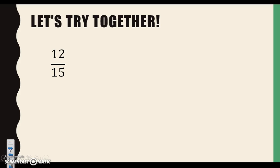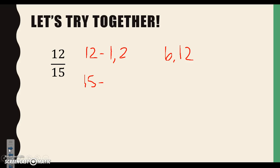Let's take a look at 12 fifteenths. Again, we're going to list our factors for 12 and also for 15. Let's think of the numbers that multiply together to give me 12. We know we have 1 and 12. We know we have 2 and 6. We also know that we have 3 and 4, which will multiply together to give you 12. Let's take a look at 15. We know that 1 times 15 gives us 15, and 3 times 5 gives us 15.